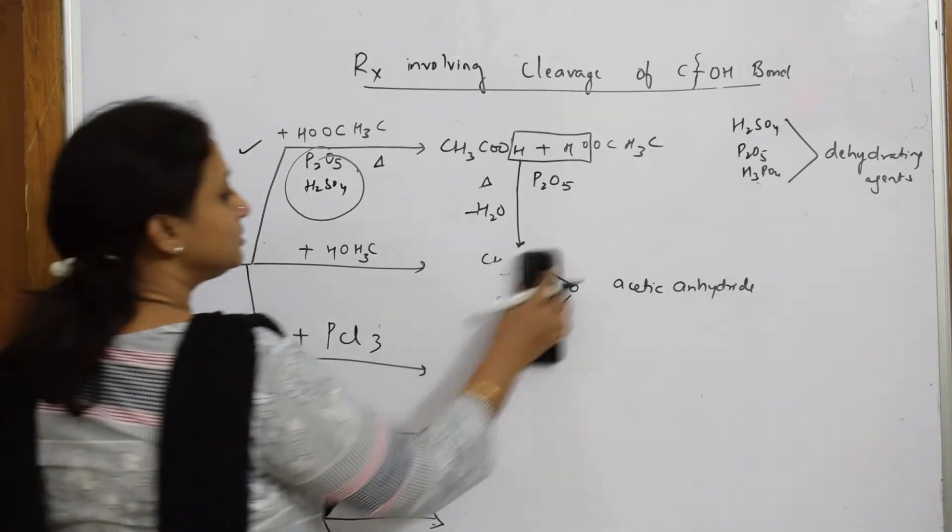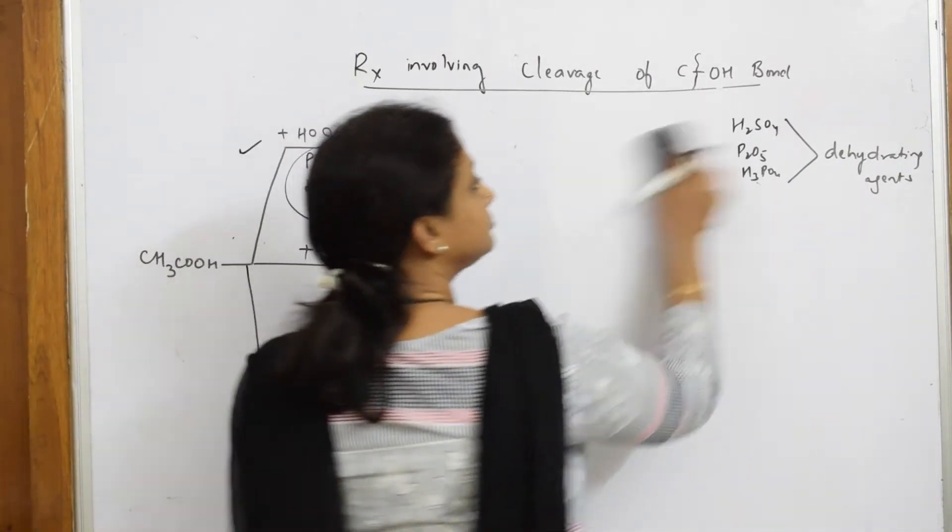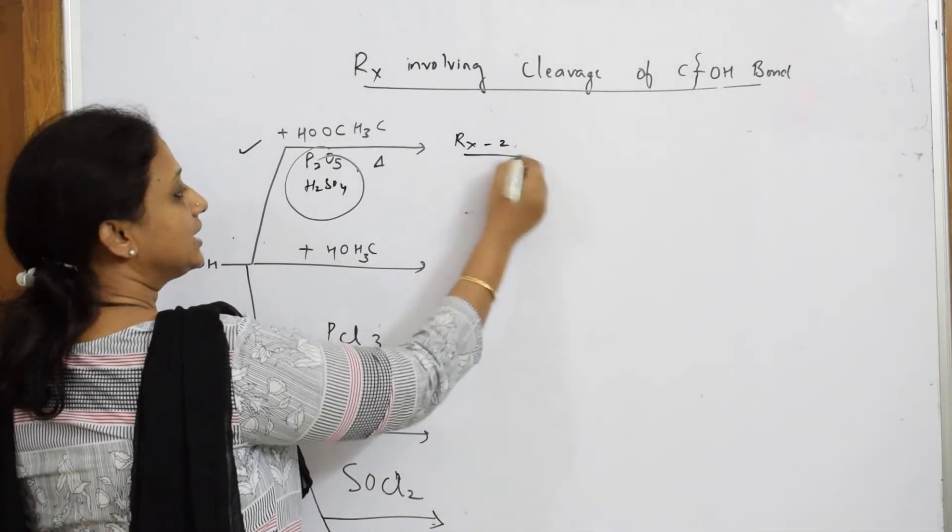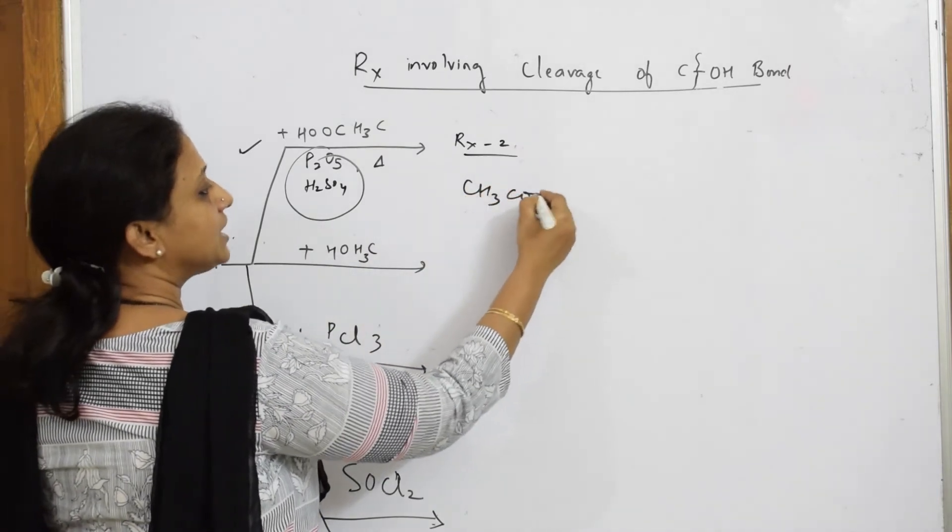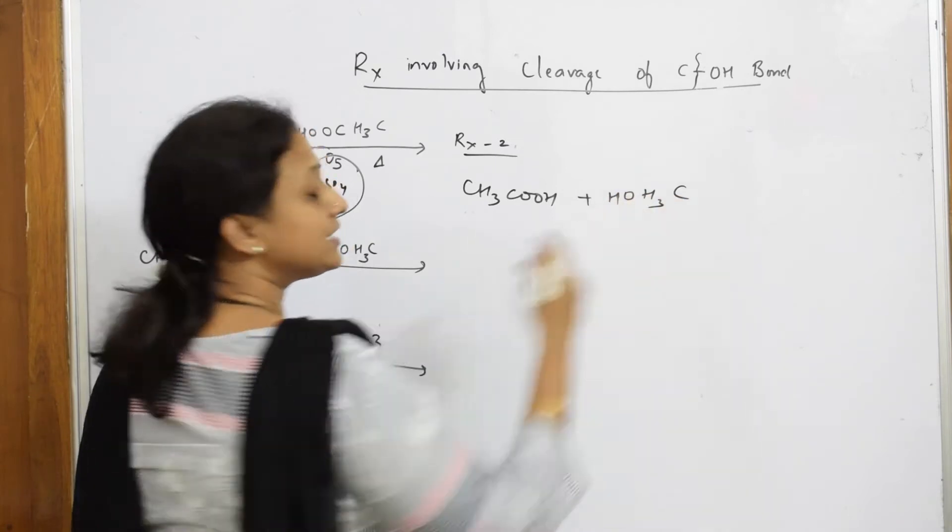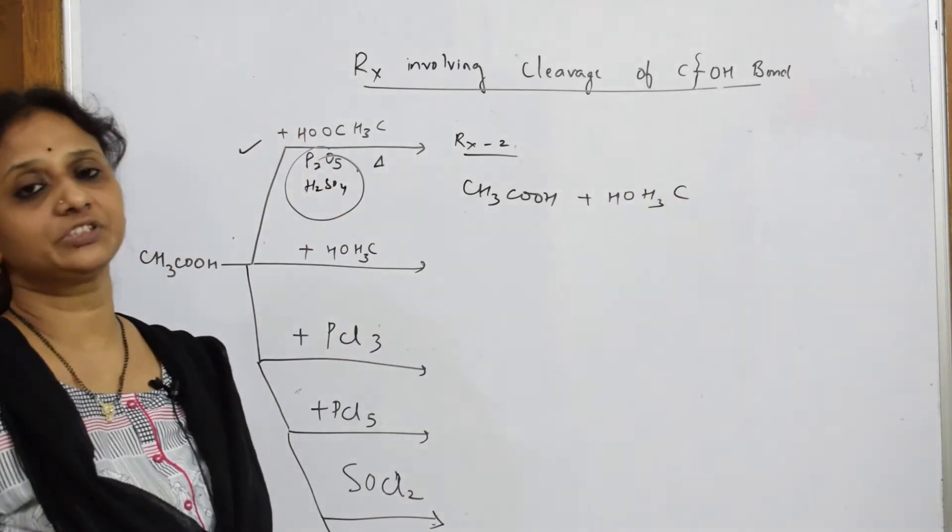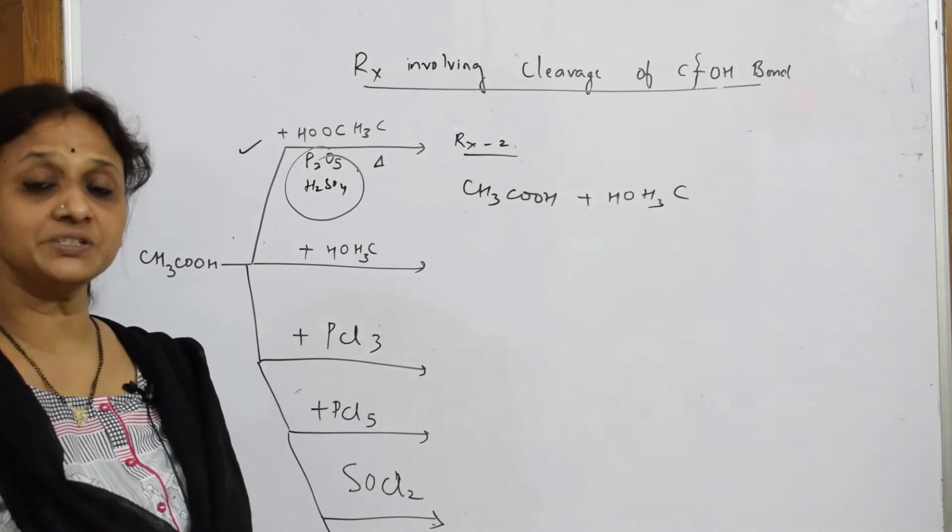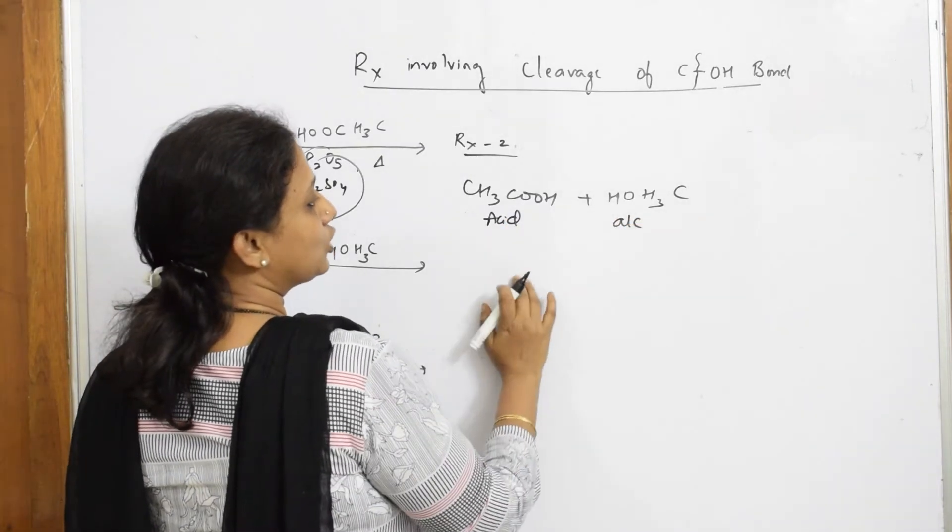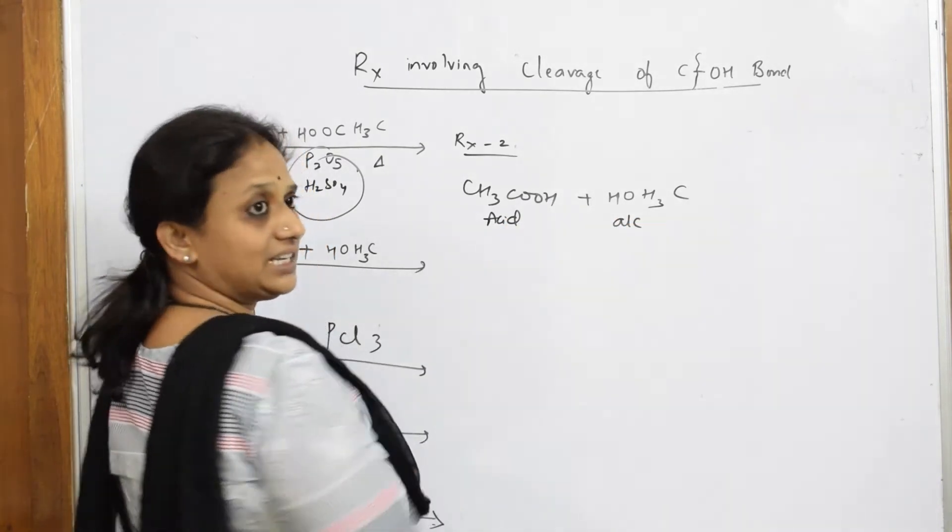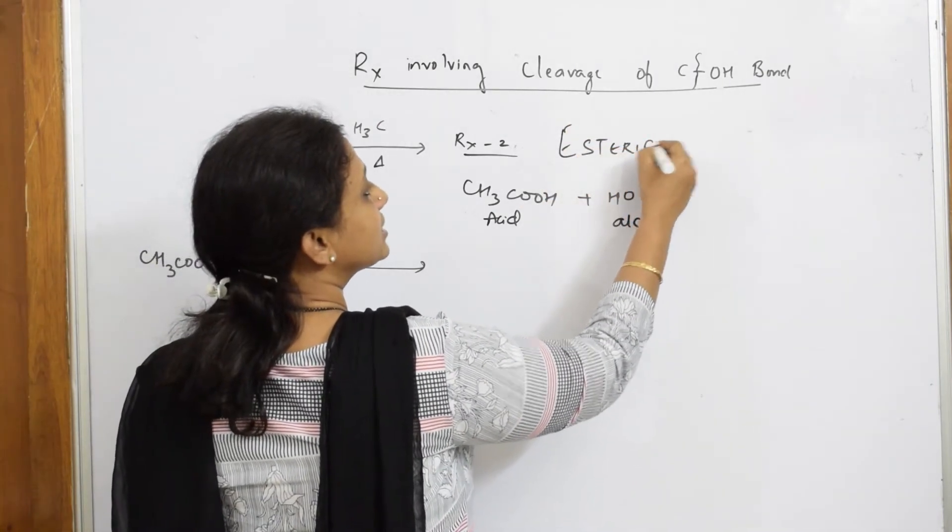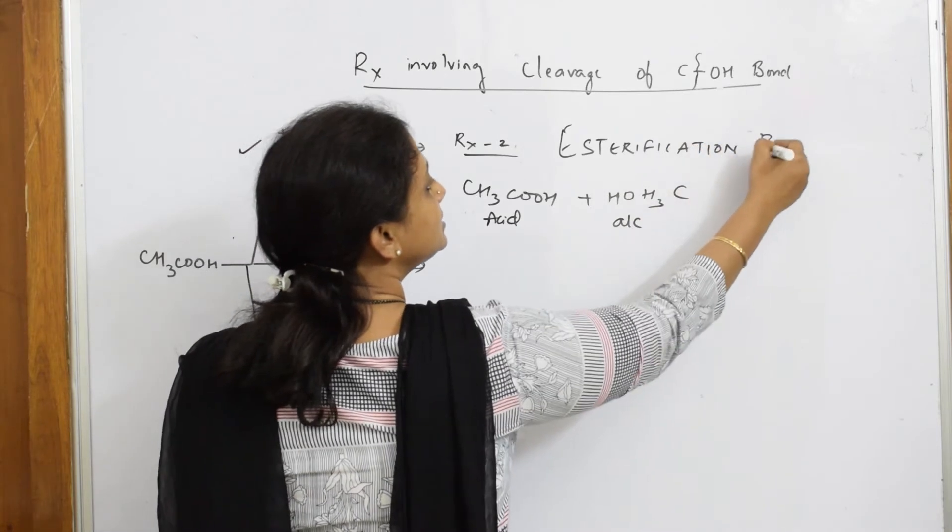Let us start with the second reaction. I have to take an acid and add an alcohol to this. We have already studied: acid plus alcohol in the presence of sulfuric acid forms ester plus water. What type of reaction? Whenever you see an acid and an alcohol in the paper, let it be any acid, let it be any alcohol, the type of reaction is esterification reaction.